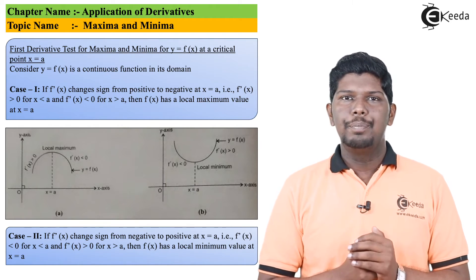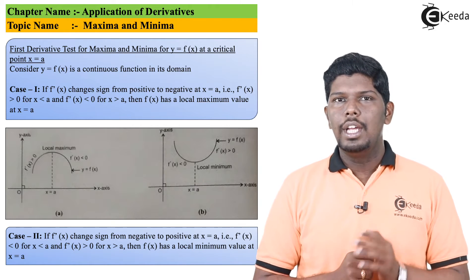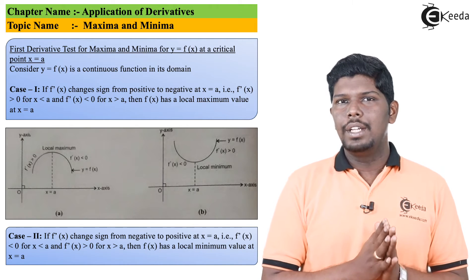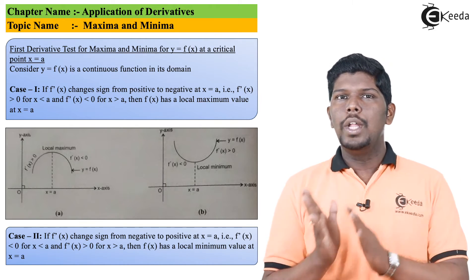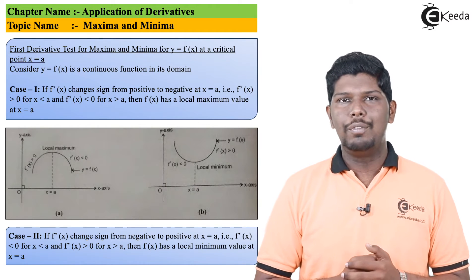But after x equals a, if I find the slope of that tangent, again for different types of points, you can see it will have a negative slope. So whenever we have transition from positive slope to negative slope, it means you are going to find the maximum value of that function.